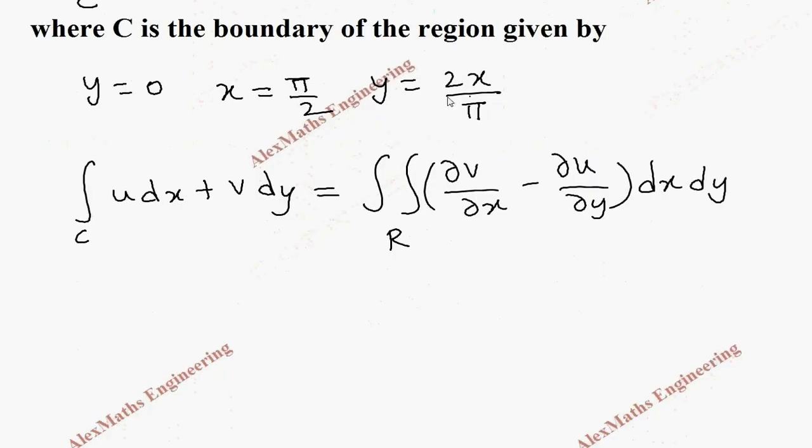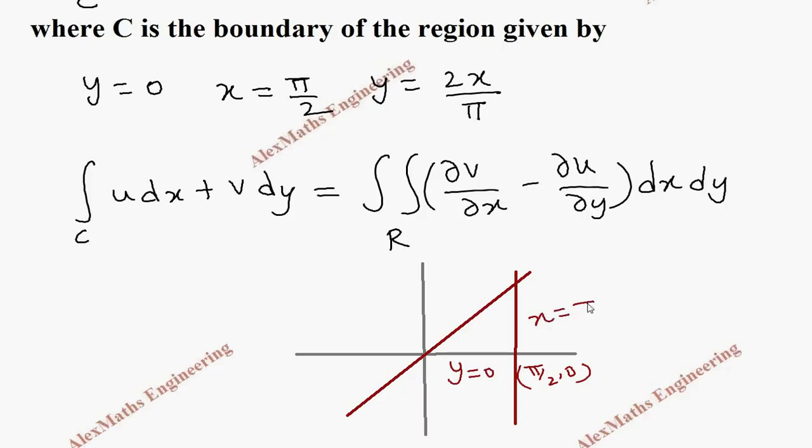And the given boundaries are y is equal to 0. Let's construct a small diagram. We have x-axis, y-axis, and x is equal to pi by 2 is a line passing through the point pi by 2, 0 in the x-axis perpendicular to the x-axis, and y equal to 2x by pi is a line passing through the origin like this, and y equal to 0 is the x-axis. So this is y equal to 0, and this is x is equal to pi by 2, and this boundary is y is equal to 2x by pi.